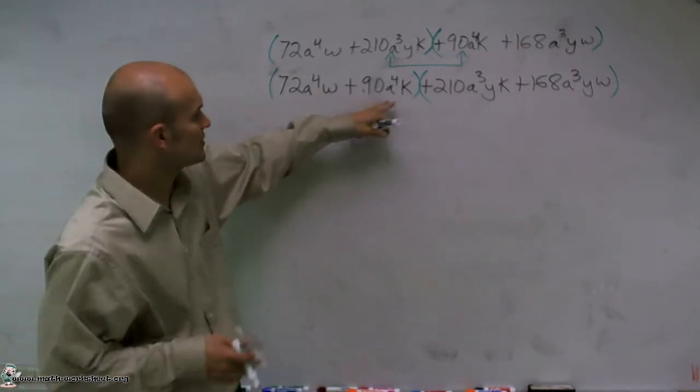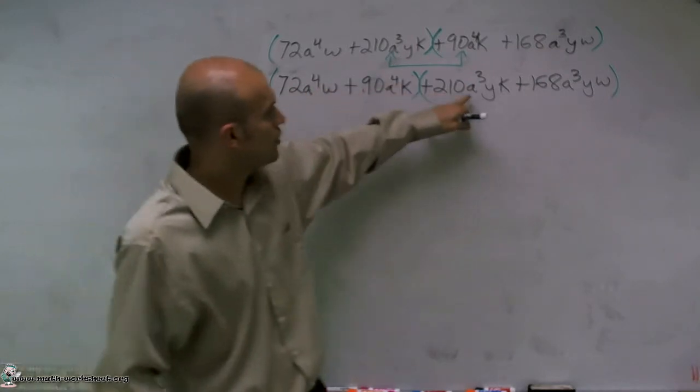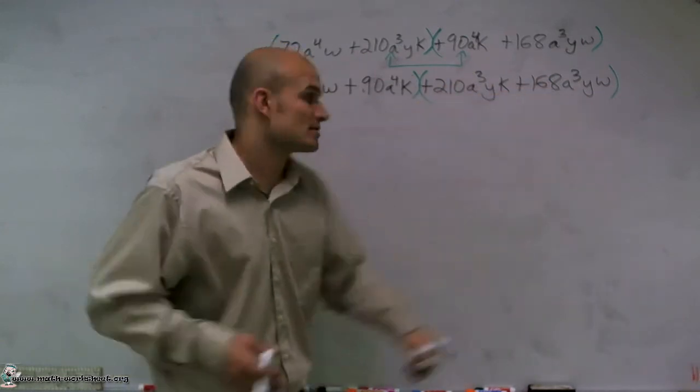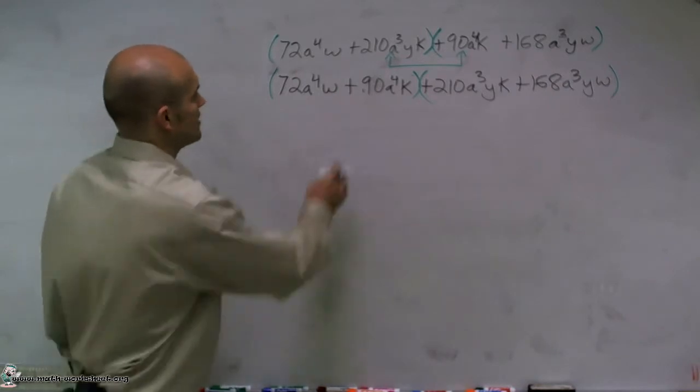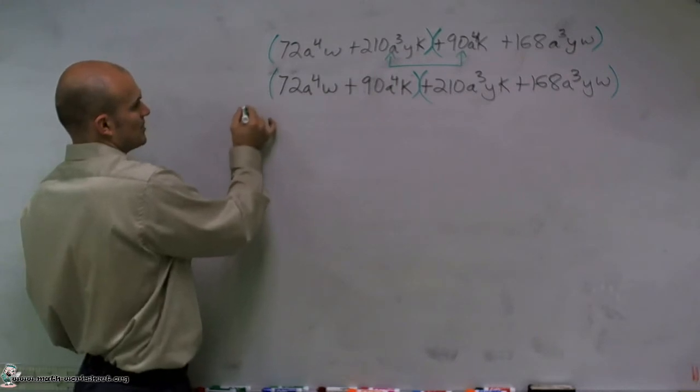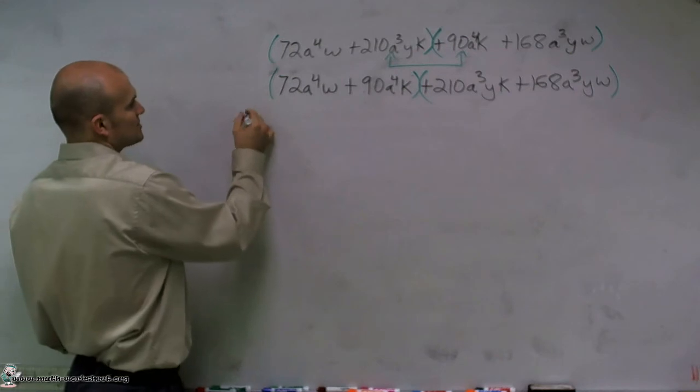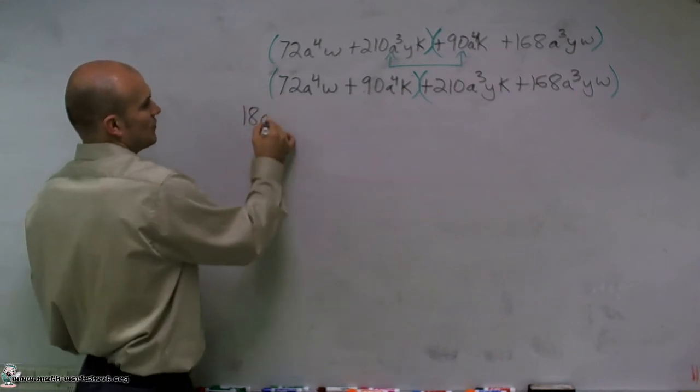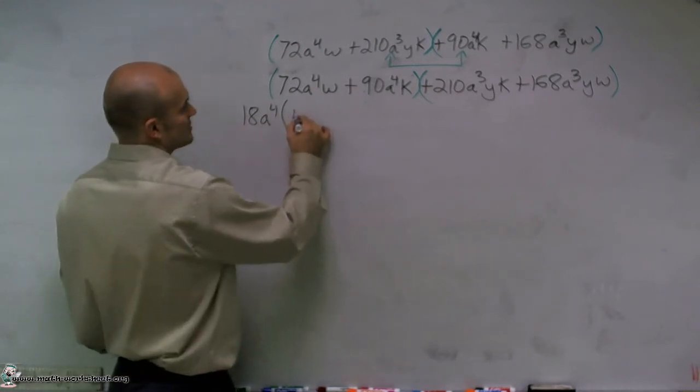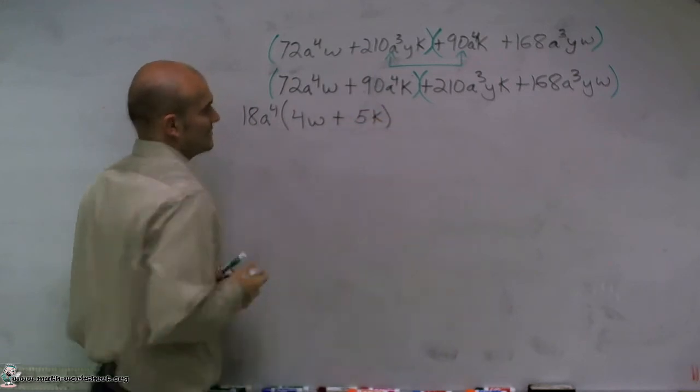If I factor out my a to the fourth, when I factor out an a to the fourth, I'll be left with a w and a k. Over here, if I can factor out an a cubed y, I'll still be left with a w and a k, so that works. So I look at my numbers, and I notice that the common factor out of my numbers is going to be the number 18. So I'll factor out an 18, and then out of the variables, the greatest common factor is a to the fourth. When I factor it out, what I'm left with is a simple 4w plus 5k.